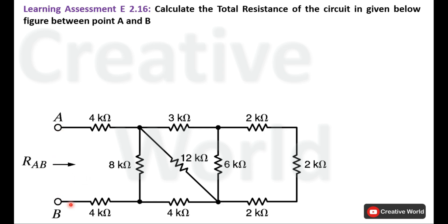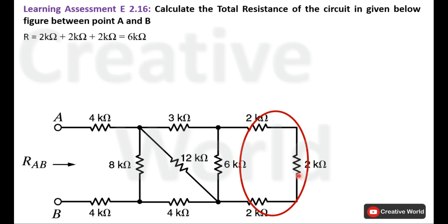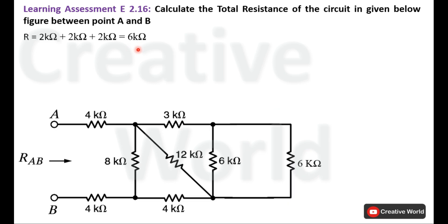Let's proceed towards the solution. We will start solving from this end and reduce the circuit up to 8 Kilo Ohm. If we observe, these three 2 Kilo Ohm resistances are connected in series, so we can add them together. That will be 2K + 2K + 2K = 6K. We can replace these three 2 Kilo Ohm resistances with a single 6 Kilo Ohm resistance, and modify the circuit accordingly.